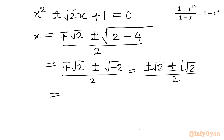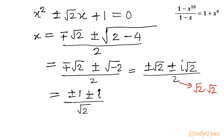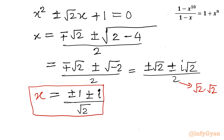There are four complex solutions here. Dividing by 2, we write (±1 ± i) / √2, since 2 = √2 · √2, one √2 cancels. So the four solutions from x^4 + 1 = 0 are (++), (+-), (-+), and (--) combinations of ±1 ± i all over √2.